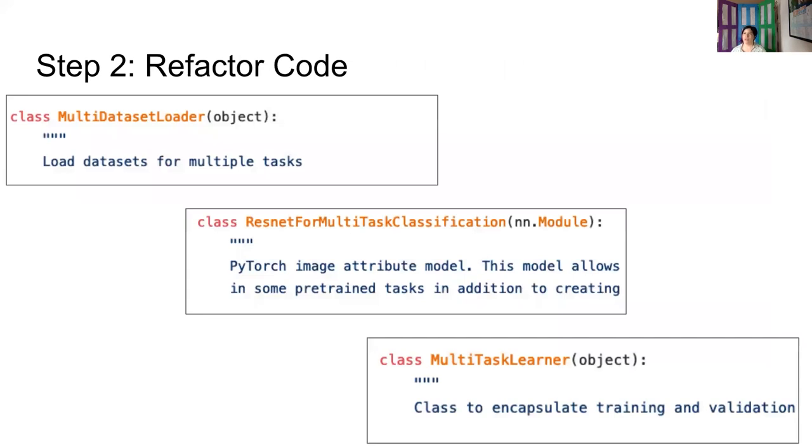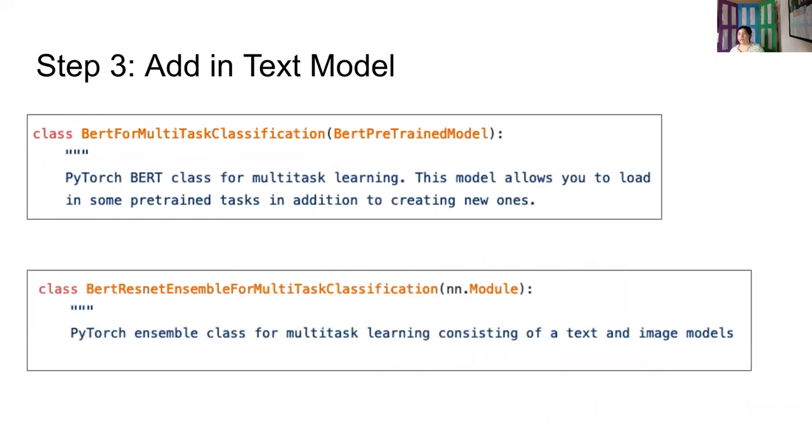So I went ahead and refactored all the code. So I created a multi dataset loader. This was to do the shuffling that Michael just mentioned of the different tasks. I created a ResNet for multitask classification. So this was basically the model that Michael described earlier, where you have the ResNet and the different task heads. And I created it so that it could work for an arbitrary number of tasks. And then finally, I also created a multitask learner to do the training and validation. And this class took care of the backpropagation of the different losses for the different tasks. So I was kind of all set up and ready to start adding in the text. And since I already had the ResNet for multitask classification, it was relatively straightforward for me to figure out how to do the same thing for a BERT model. So I created a text model for multitask classification as well as the ensemble model that would combine the BERT and ResNet outputs to the task heads.